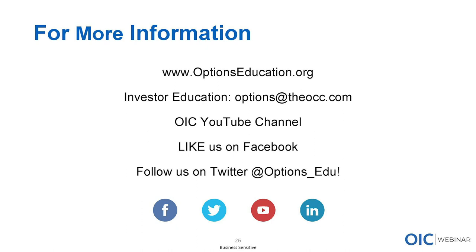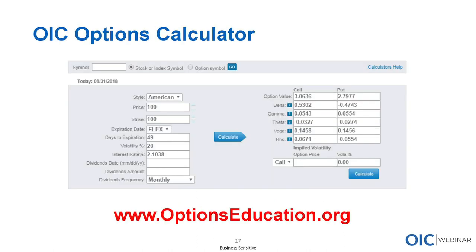One question that came up: how do I access an option pricing model? The quick answer is on our website we have an options calculator you can access free of charge. Go to optionseducation.org, under the menu button there's a section for tools and calculators. I believe it's displaying the Cox-Ross-Rubinstein model to take into account early exercise.